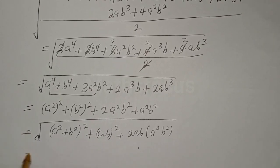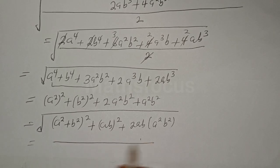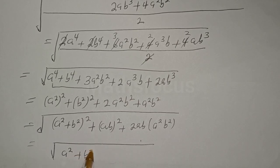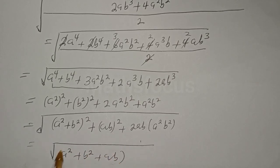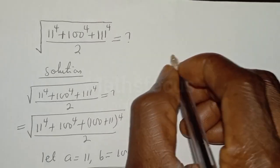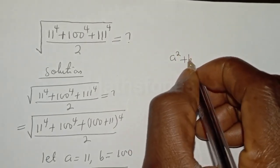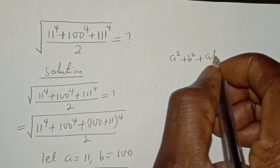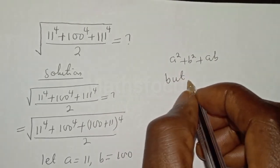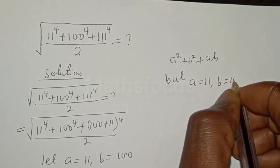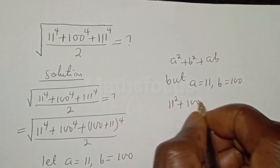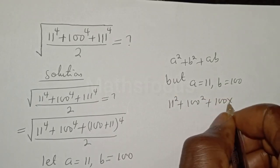Taking the square root gives us a² plus b² plus ab. Substituting back, a equals 11 and b equals 100, so we have 11 squared plus 100 squared plus 100 times 11.